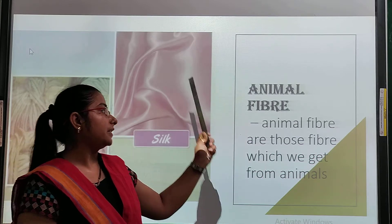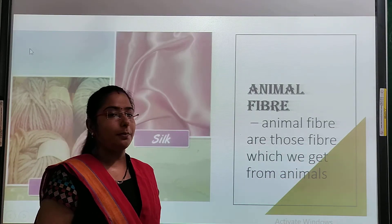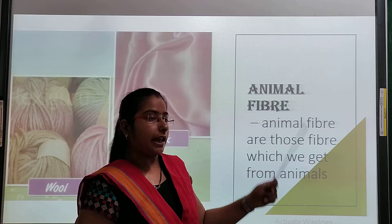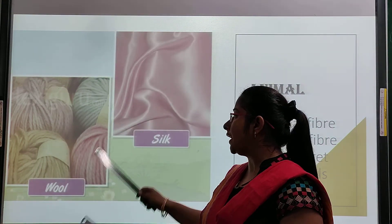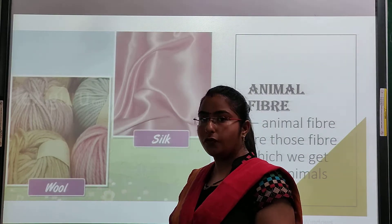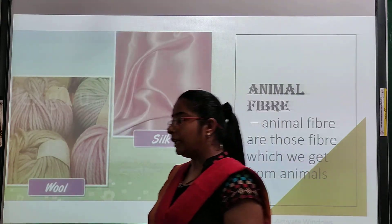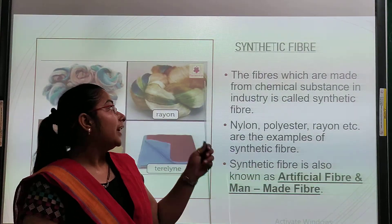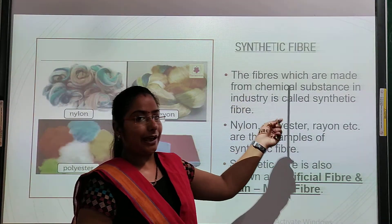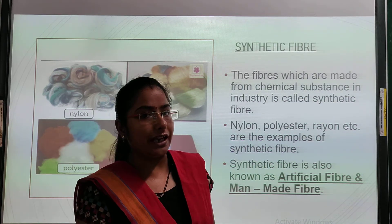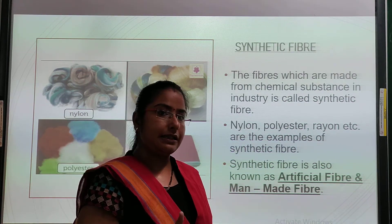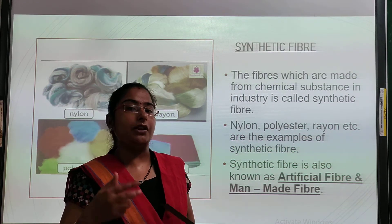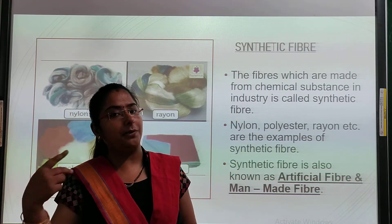Animal fibers are those fibers which we get from animals — we call them animal fibers. Examples: we get silk from the silkworm, and we get wool from sheep and llama. These are the animals from which we get wool and silk.